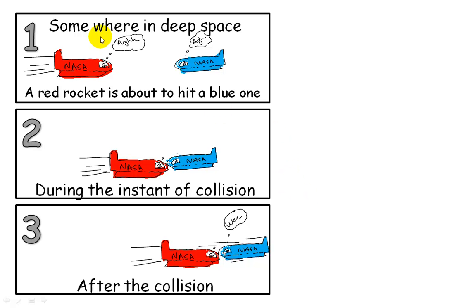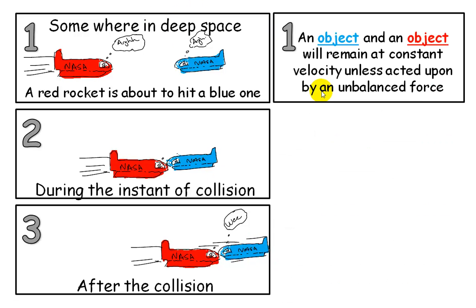This is the comic. Somewhere in deep space, a red rocket is about to hit a blue one. From our perspective, the blue rocket is stationary. This thing is moving at a constant velocity. They smash into each other, and then they both fly off together.